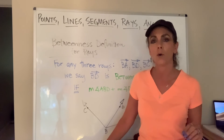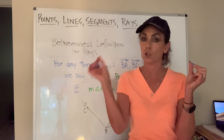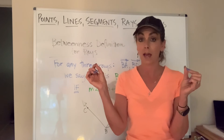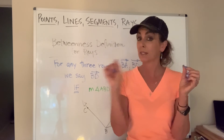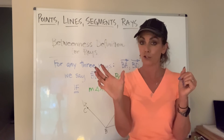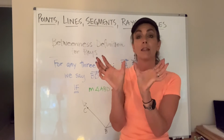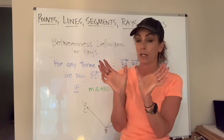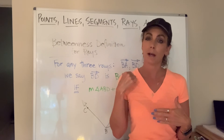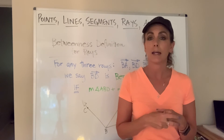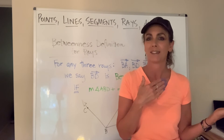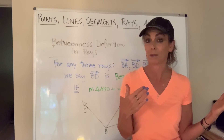We discussed betweenness and how when a point was between two other points, it meant a couple of things: the three points were distinct, they were collinear, and the distance between the first two plus the distance between the second and third would equal the distance between the first and the third. Similarly, we can apply this to rays, and it really goes back to what we just did with the angle addition postulate — these two things are closely related.